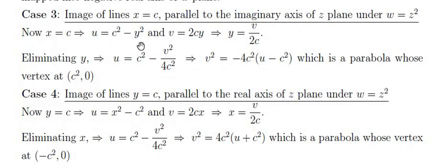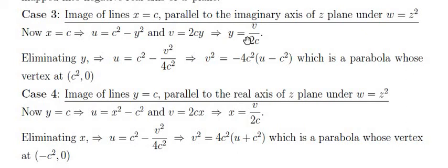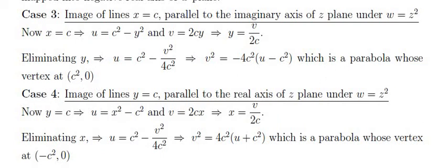Case 3: Image of the line x = c (parallel to the imaginary axis) under w = z². Substituting x = c gives u = c² − y² and v = 2cy. Eliminating y by setting y = v/(2c) and substituting into u, we get u = c² − v²/(4c²). Rearranging: v² = 4c²(u − c²), which is a parabola with vertex at (c², 0).